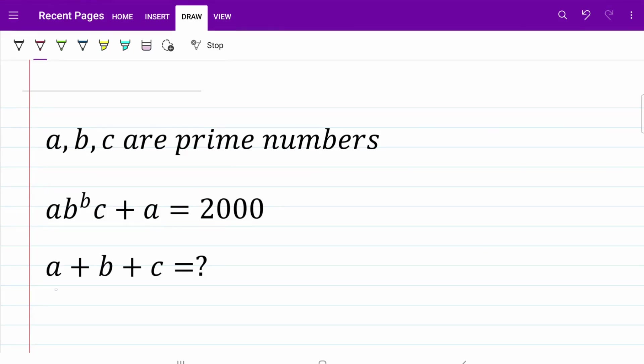We're looking for the sum of a, b, and c, given that a multiplied by b to the power of b multiplied by c plus a is equal to 2,000, and we are confined to prime numbers only.